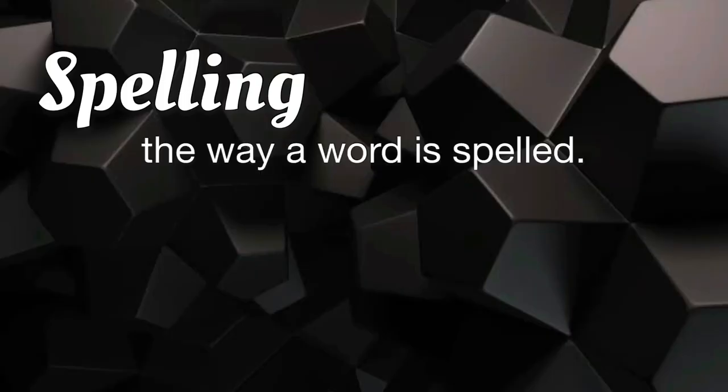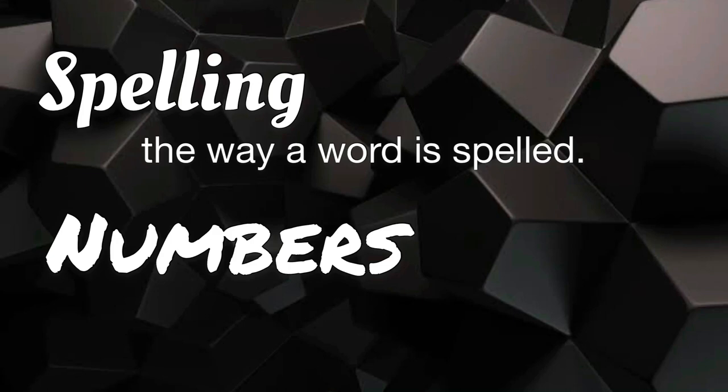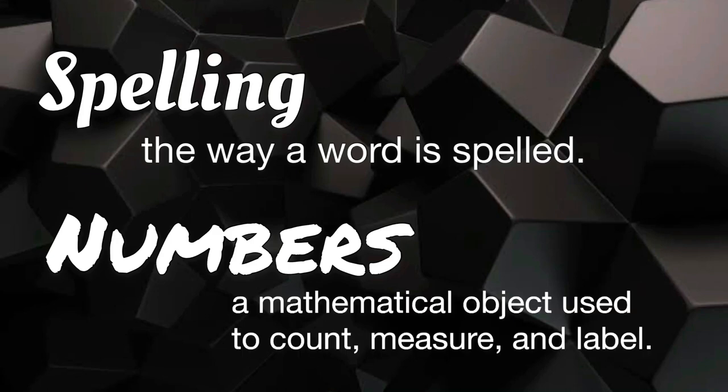Spelling: the way a word is spelled. Numbers: a mathematical object used to count, measure, and label.